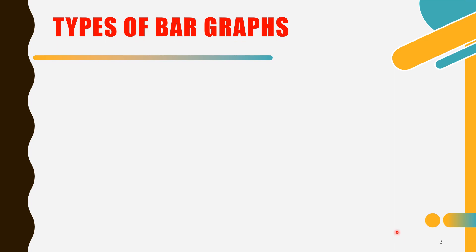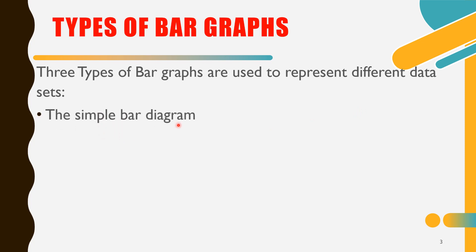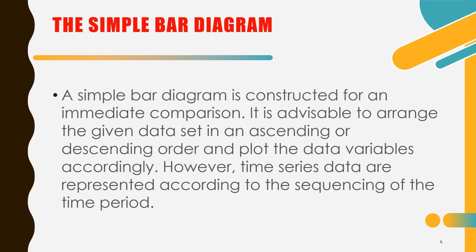Types of bar graphs. Three types of bar graphs are used to represent different sets. We have the simple bar diagram or bar graph and the combined bar diagram or graph. And we have the polybar diagram. What is a simple bar diagram or the simple bar graph? A simple bar diagram is constructed for an immediate comparison. It is advisable to arrange the given data set in an ascending or descending order and plot the data variables accordingly. However, time series data are represented according to the sequencing of time period.